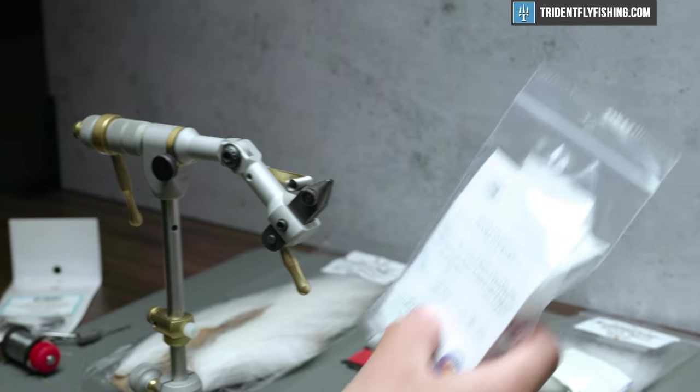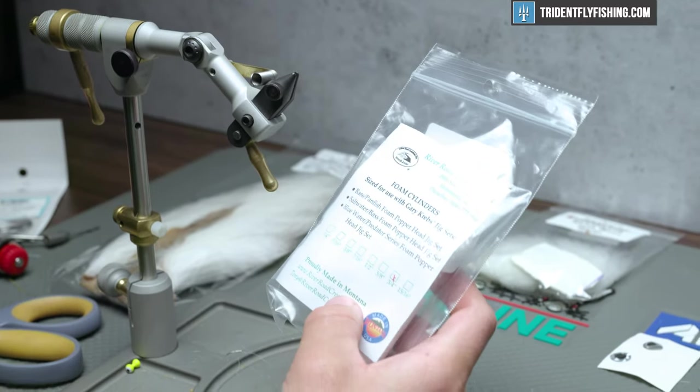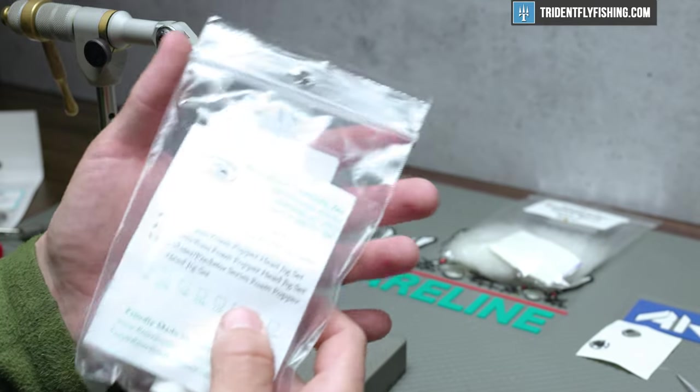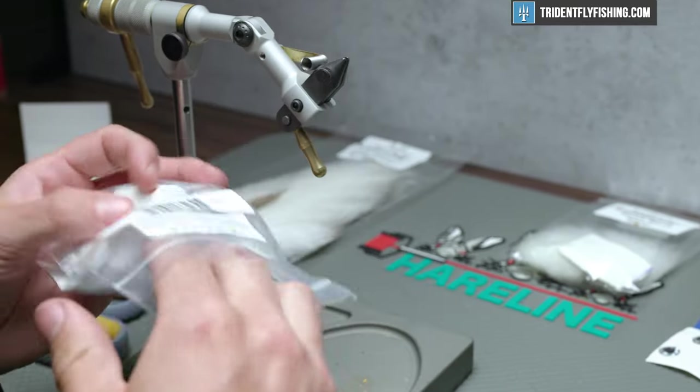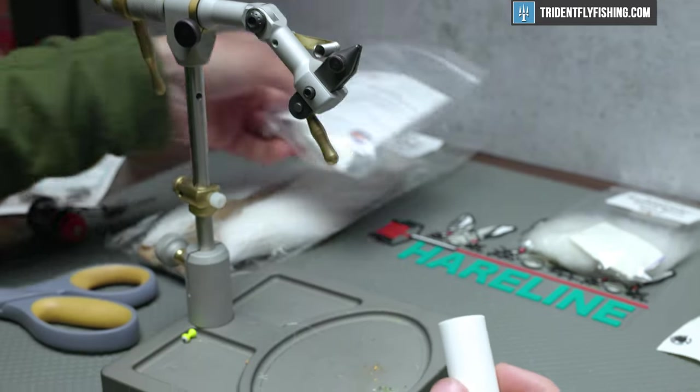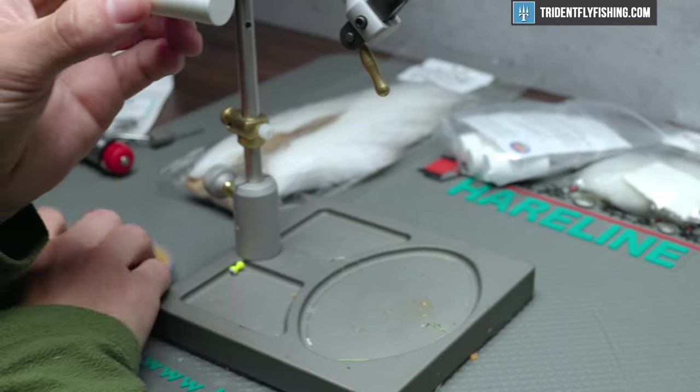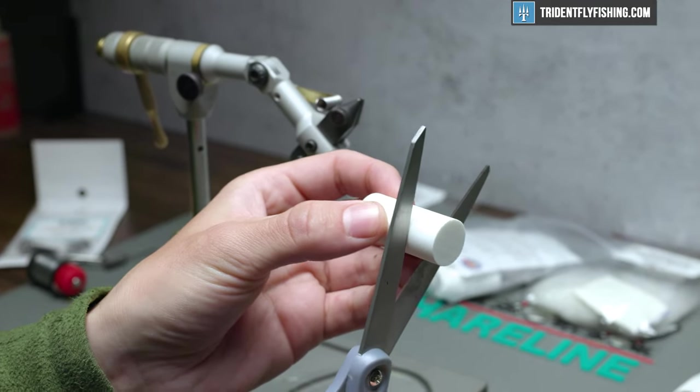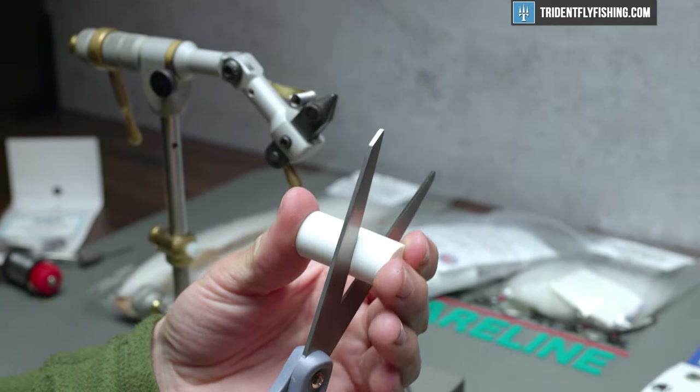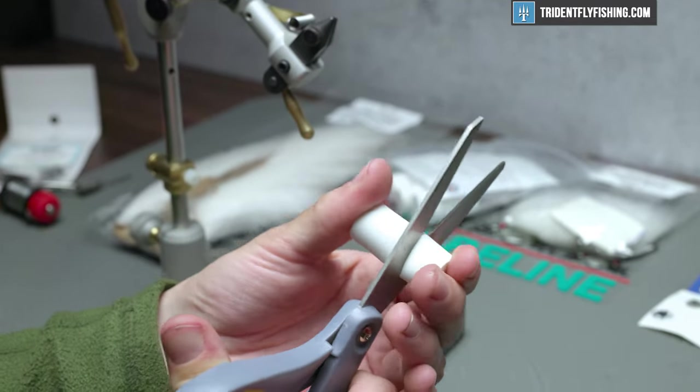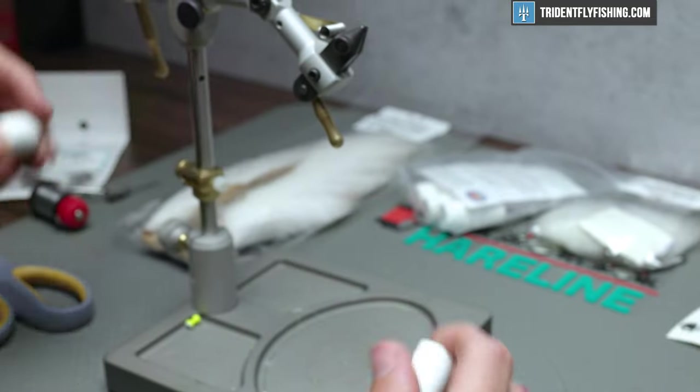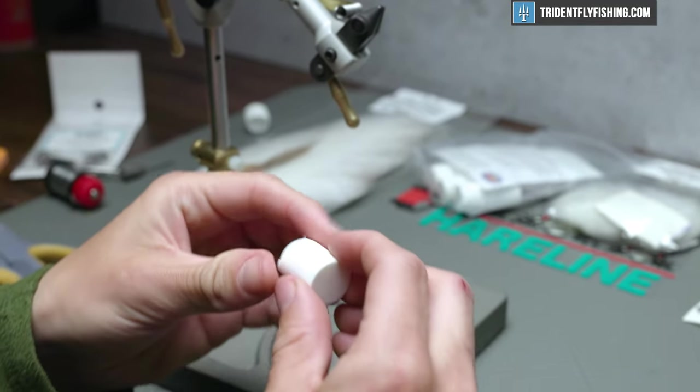We're going to get started off the vise with some 3/4 inch foam cylinders from River Road Creations. These are going to be color white. I'm going to grab one of these and our first step is to cut probably about an inch off the end of it. You can save that. It's a good banger head for another one of Bob Popovics fly patterns.